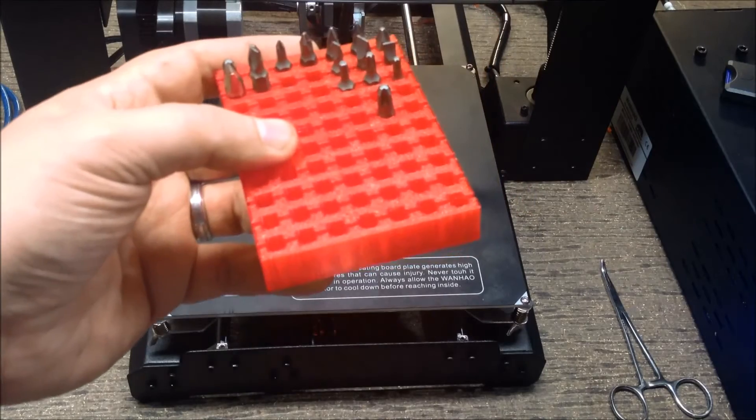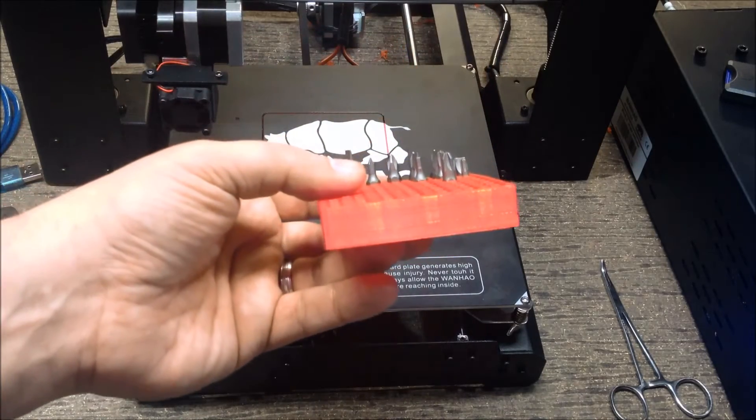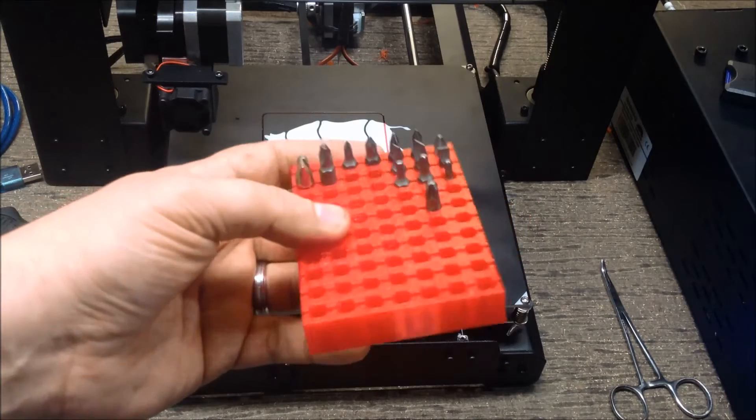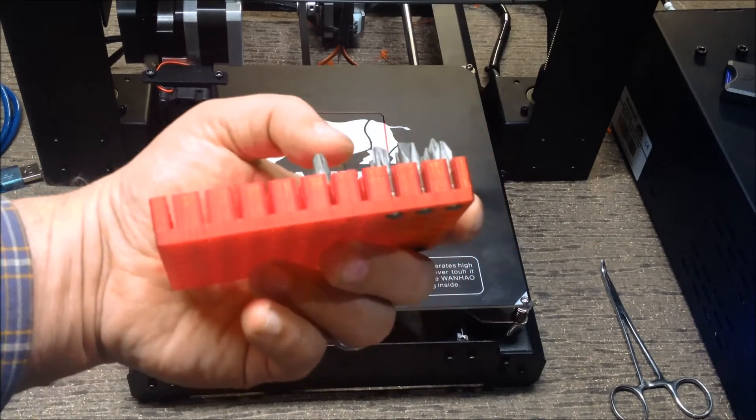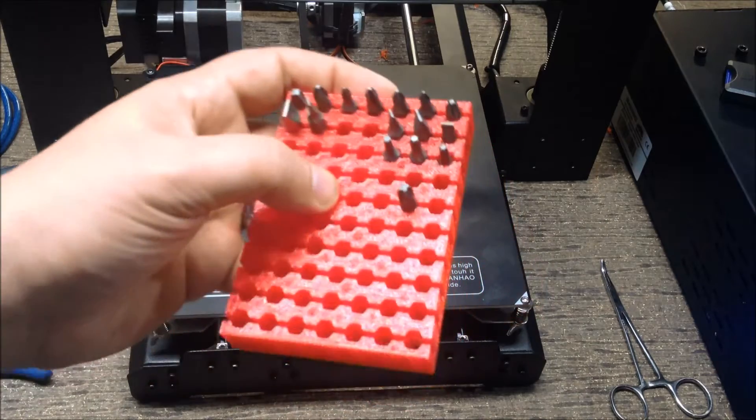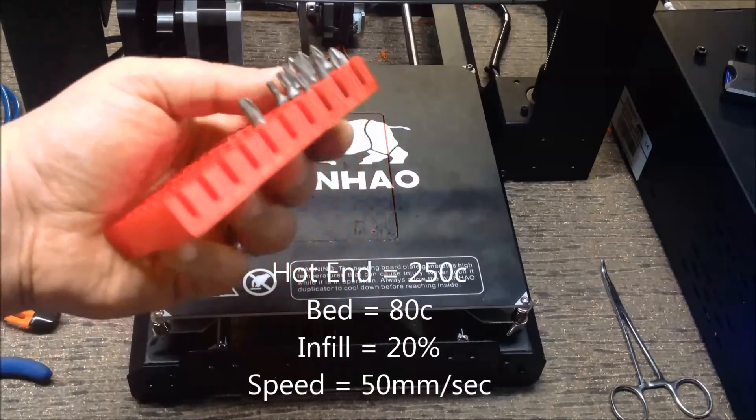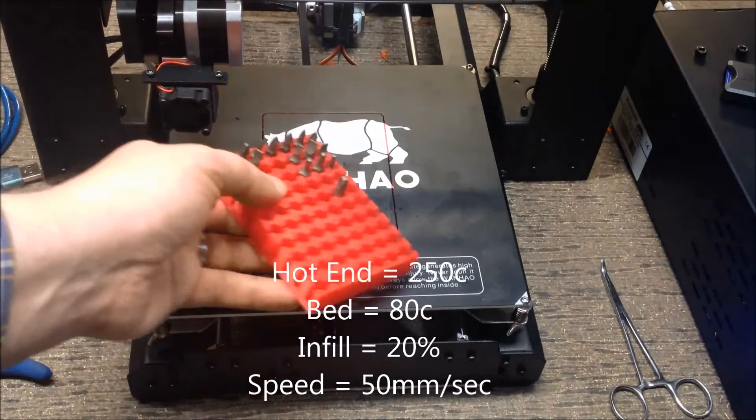So, this was printed at 50 millimeters per second, 250°C on the hot end, 80 on the bed, with a 20% infill. And, this thing is really, really nice. I mean, and that's one of the things I wanted to experiment.